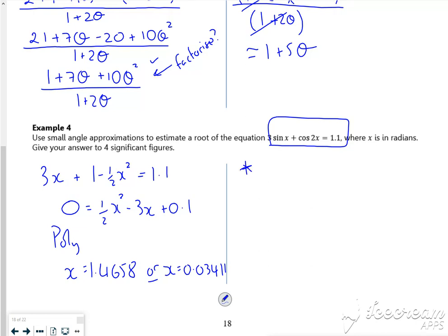Now, we're told that for the small angle approximation, θ has got to be between plus and minus 1. So because of that, my value is 0.03411.